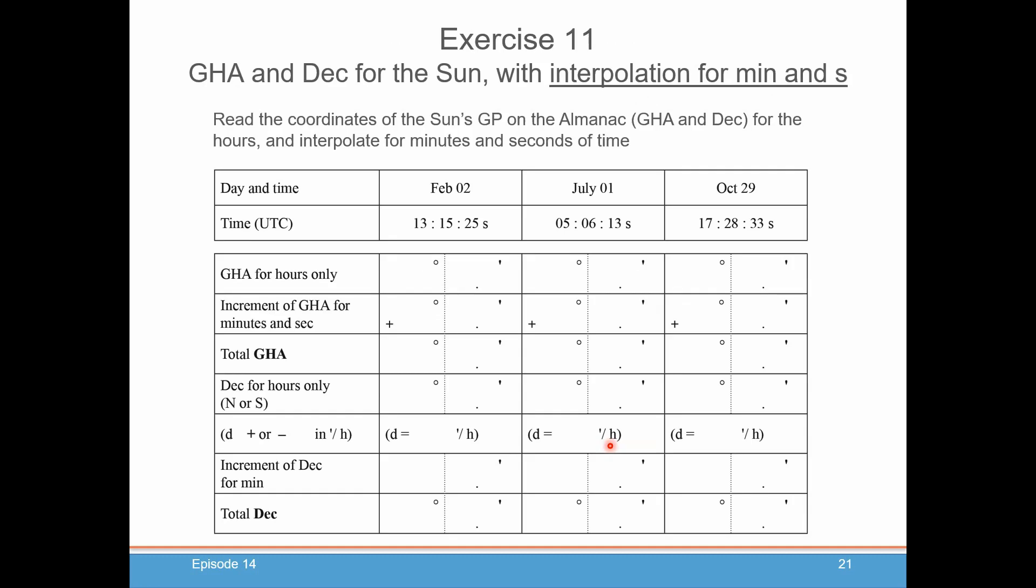And now we've got some good examples for you to try, some exercises for you to try. We've got dates and times. Pull the numbers out of the almanac. Pull out your interpolation numbers from the increments and corrections table. And get your GHA and your declination. Good practice, and hopefully you find it fairly straightforward. You're going to say, what was all of the hubbub and commotion that celestial navigation is so difficult? As you can see, it's something you probably can teach a fourth grader to do.